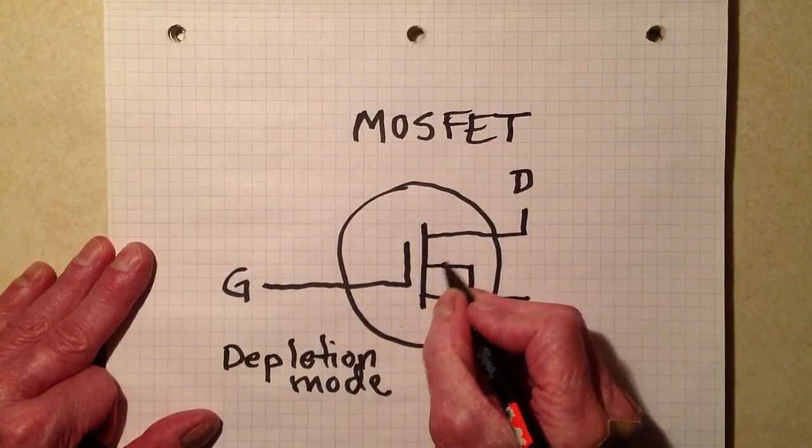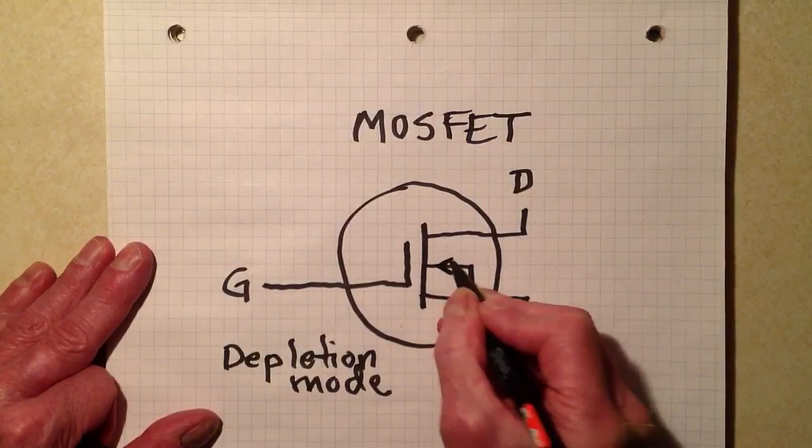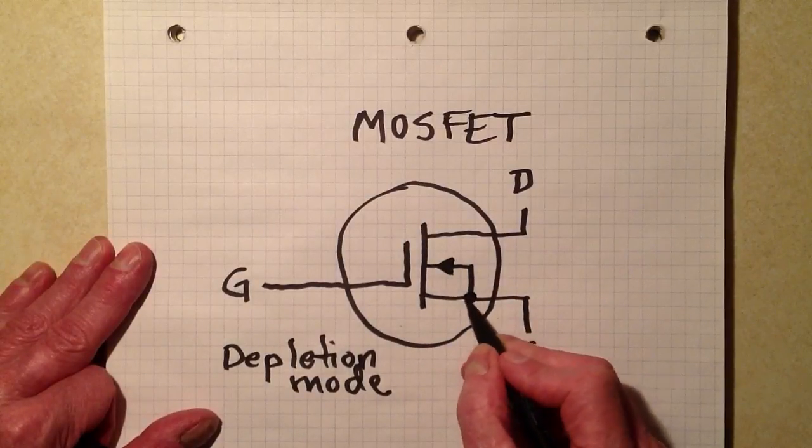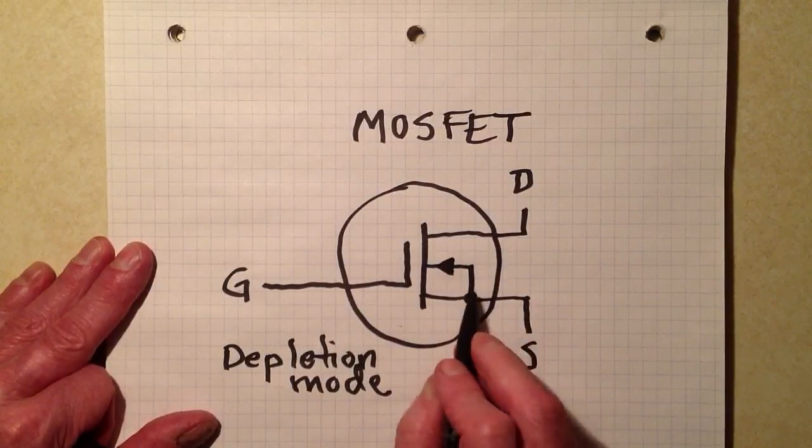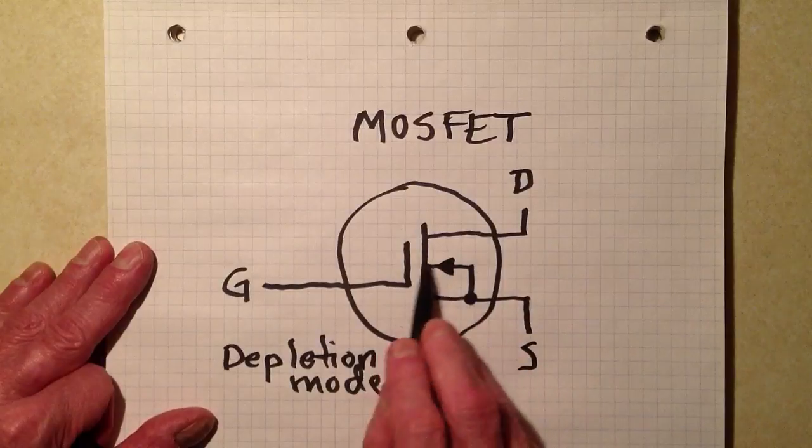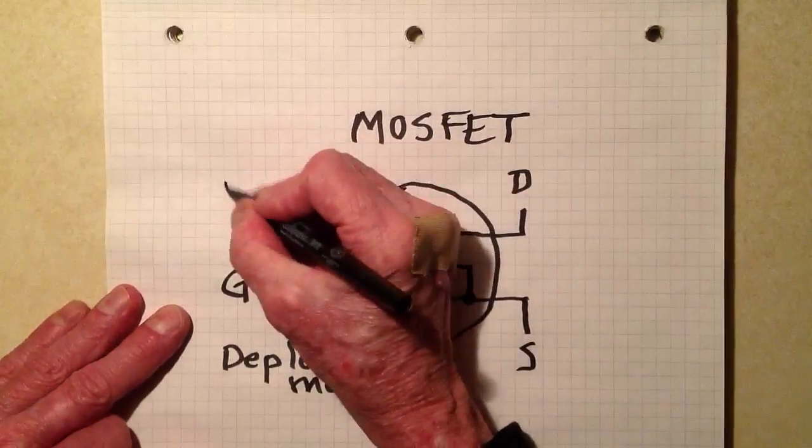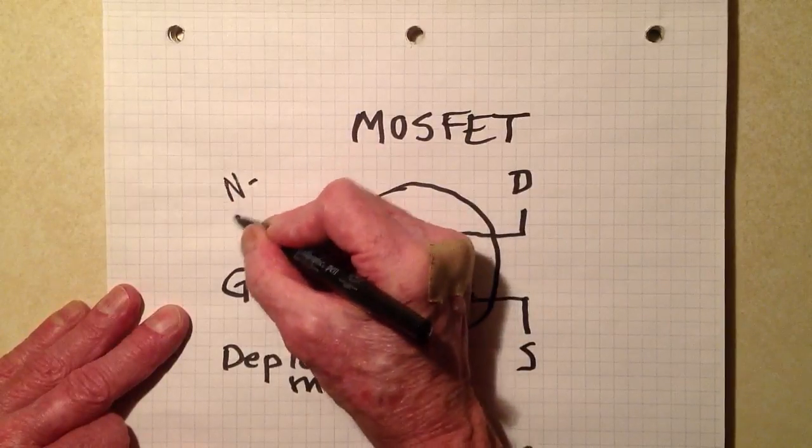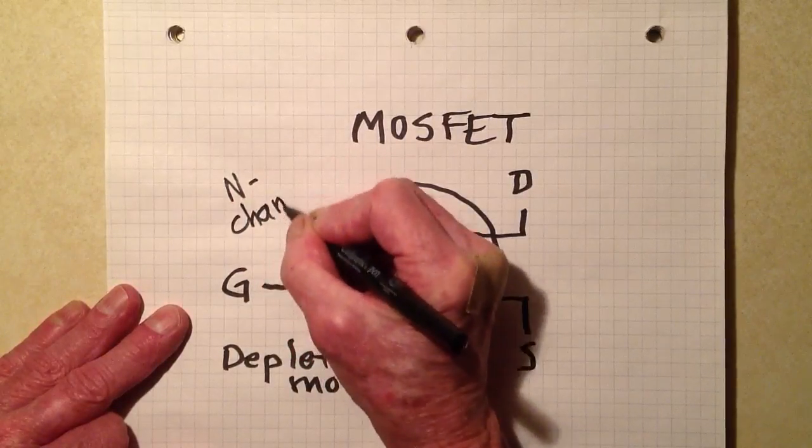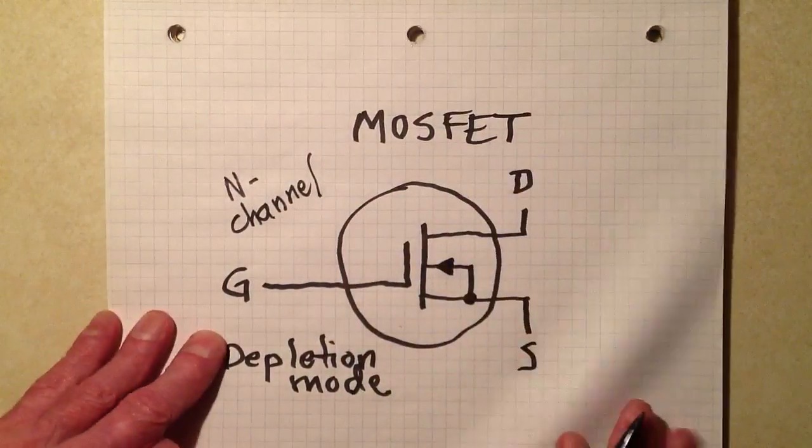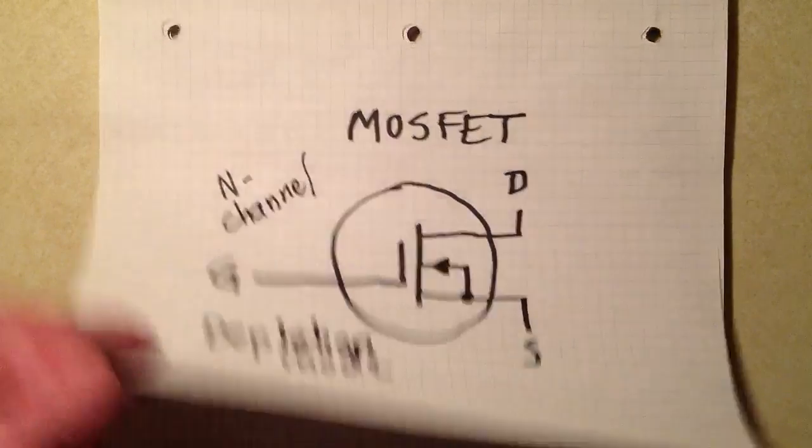We indicate an N-channel device by placing an arrow pointing in in this little thingy right here inside the symbol. That's how we indicate that. This is an N-channel depletion mode MOSFET. Alright.